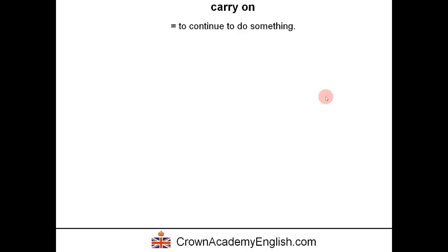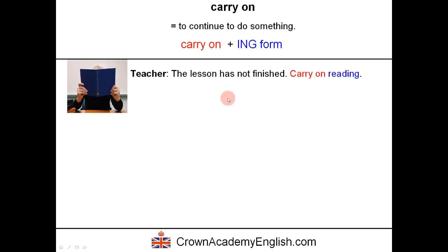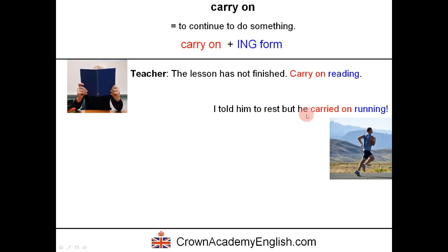Carry on. This means to continue to do something. The form is carry on followed by the ing form of a verb. Example: The teacher says the lesson has not finished — carry on reading. So we have carry on followed by another verb in the ing form, meaning continue reading. Another example: I told him to rest but he carried on running — so he continued to run. Again, in the past tense, the form is IED at the end.